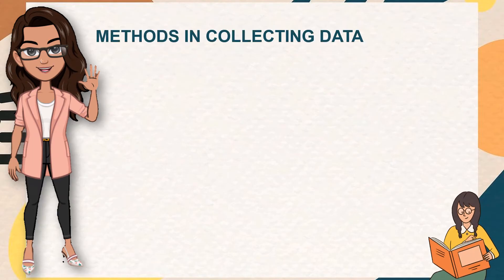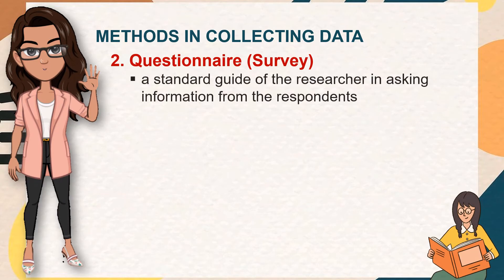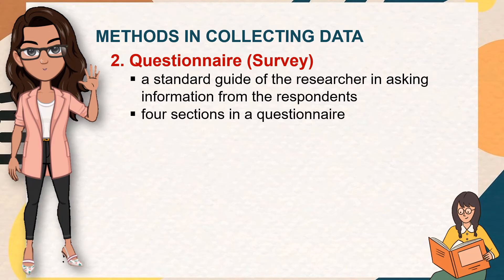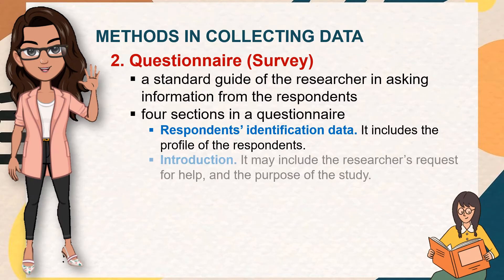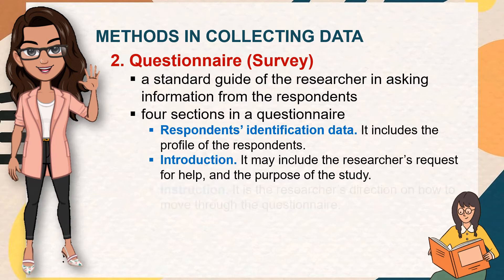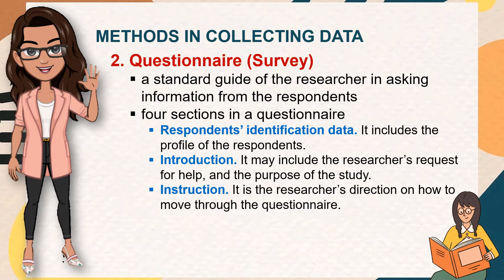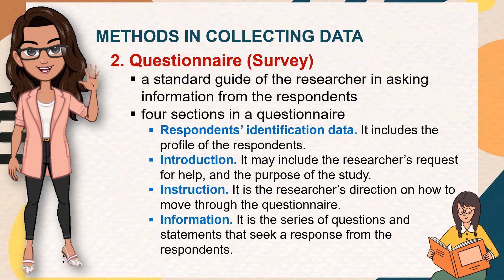The next method in collecting data is through questionnaire or survey. It serves as a standard guide for the researcher in asking information from respondents and helps simplify and quantify respondents' behavior. There are normally four sections in a questionnaire: respondents' identification data, which includes the profile of the respondents; introduction, which includes the researcher's request for help and purpose of the study; instructions on how to move through the questionnaire; and the information section, which is the series of questions and statements seeking a response.